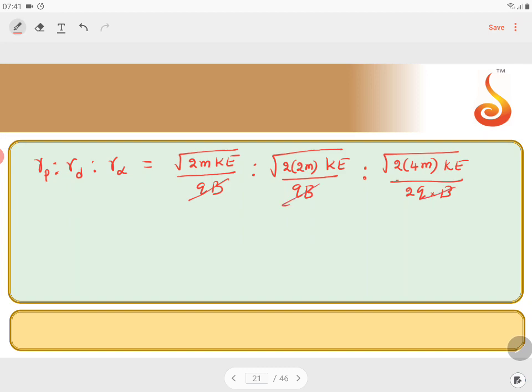QB will cancel, 2m KE will cancel. So what is remaining here? 1 is remaining. Here root 2 is remaining. Here root over 4 by 2 is remaining. So 1 is to root 2 is to 2. Here 2 by root 4 is nothing but 2, 2 by 2 is 1. So 1 to root 2 to 1 is the answer.